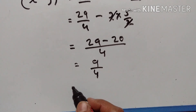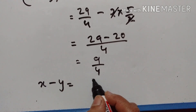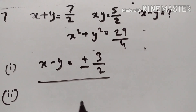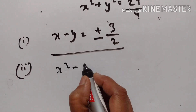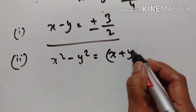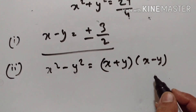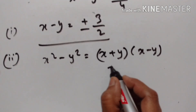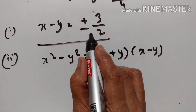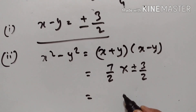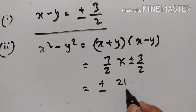Taking the square root on both sides, X minus Y = ±3/2. Next, we find X² − Y² using the formula (X+Y)(X−Y). X+Y = 7/2 and X−Y = ±3/2. Therefore X² − Y² = 7/2 × ±3/2 = ±21/4.